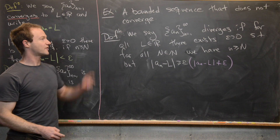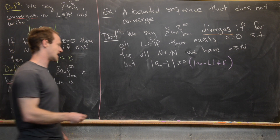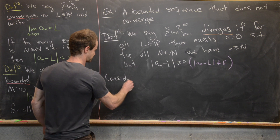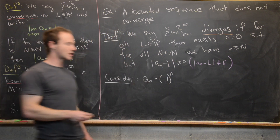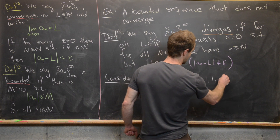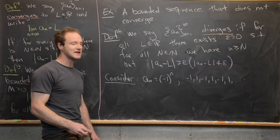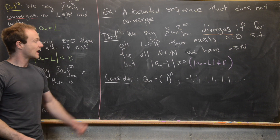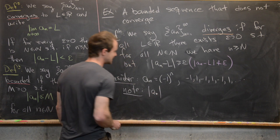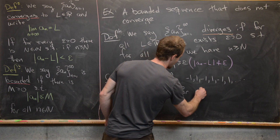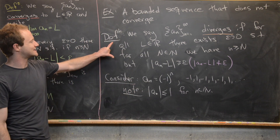Now that we have a careful definition of divergence, let's look at an example of a bounded sequence that diverges. Consider the sequence a_n = (−1)^n. This has the form −1, 1, −1, 1, −1, 1, and so on. All odd-indexed terms are −1 and all even-indexed terms are +1. We can see it's bounded: |a_n| ≤ 1 for all natural numbers n. But this sequence definitely does not converge.